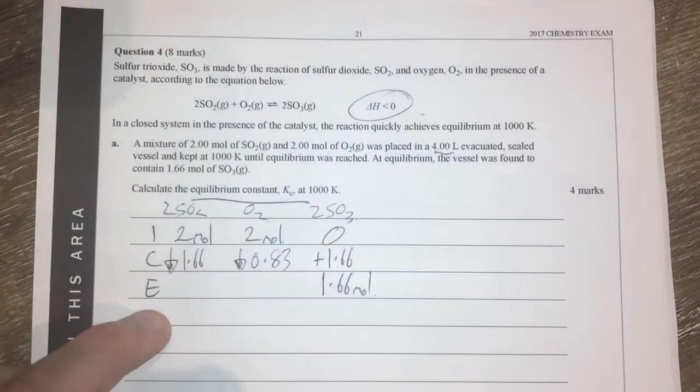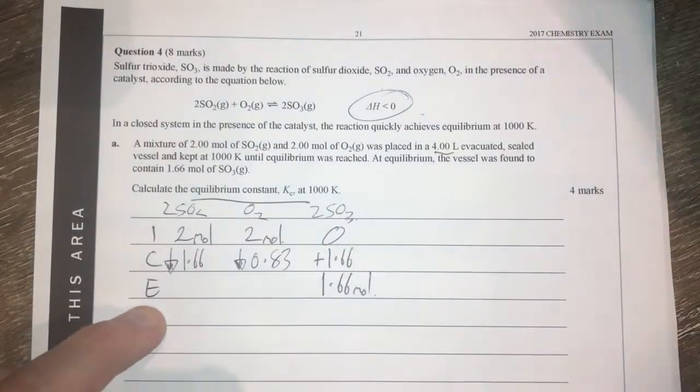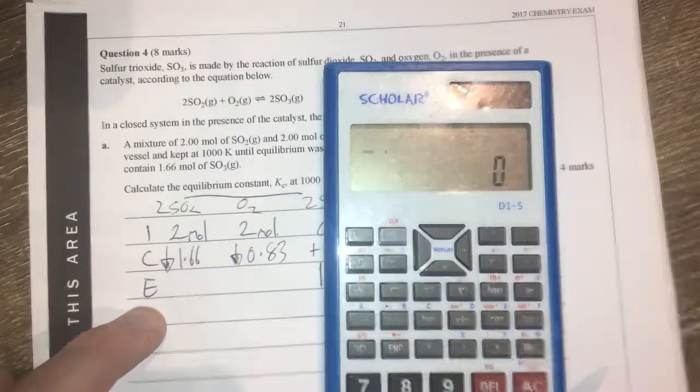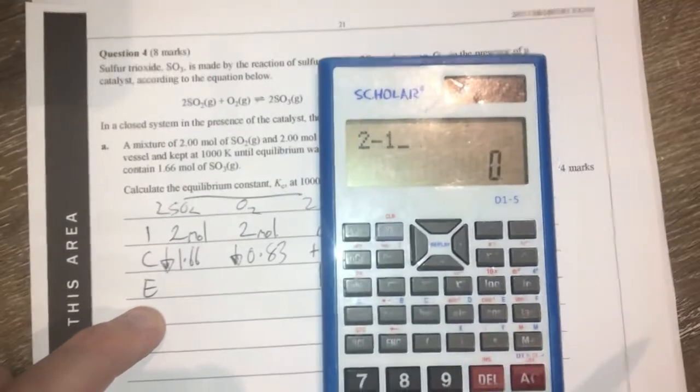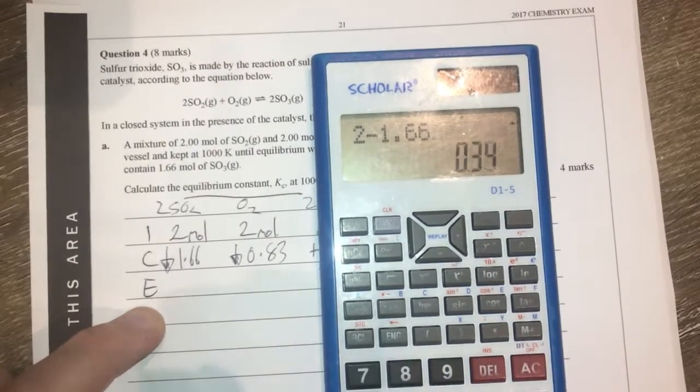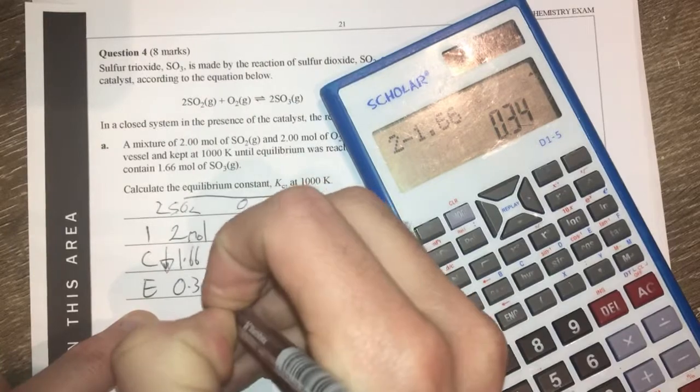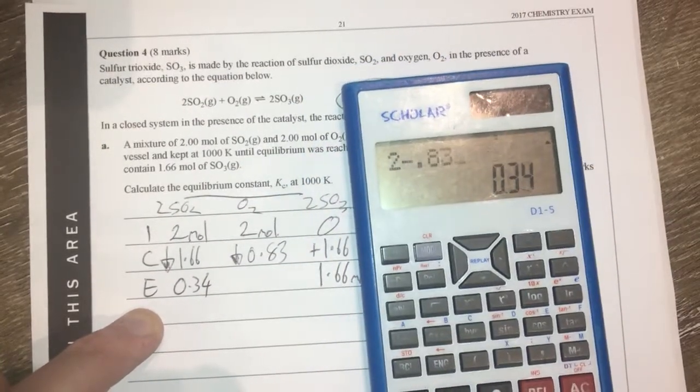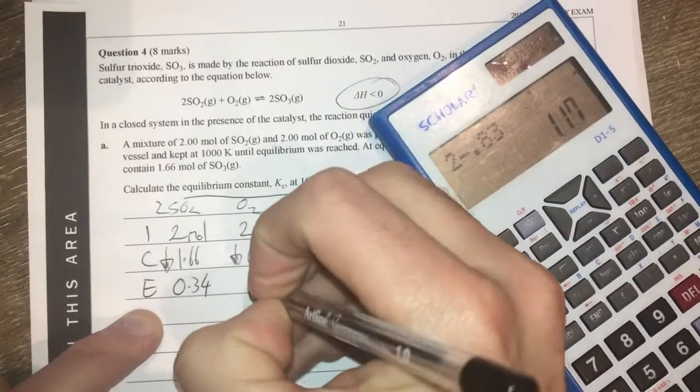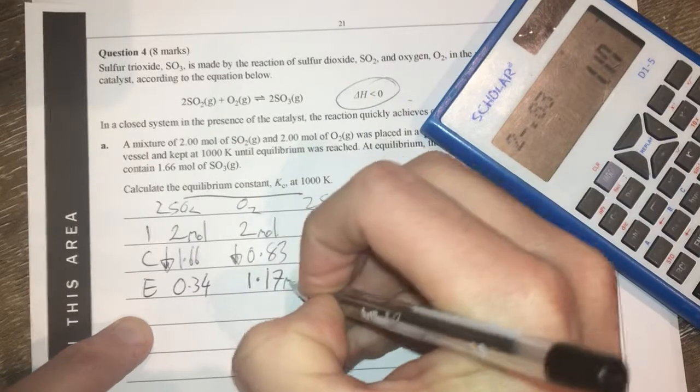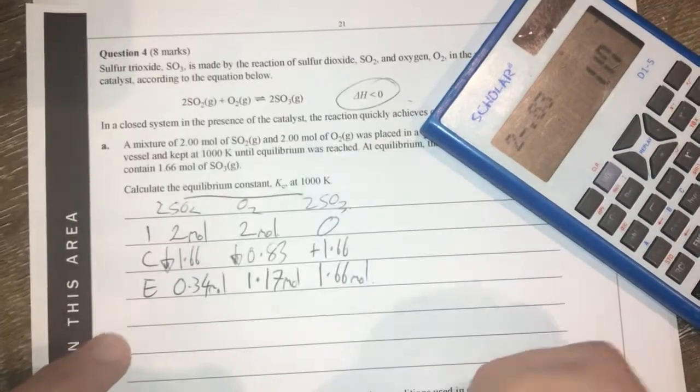What does that mean for my equilibrium amounts? Well because I don't want to get things wrong I'm going to use my trusty calculator. Two take away 1.66 gives me 0.34 and then two take away 0.83 gives me 1.17. All those are moles as well.